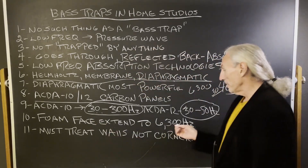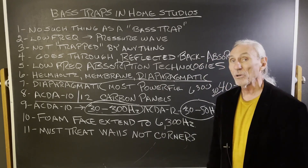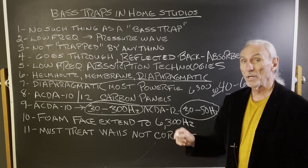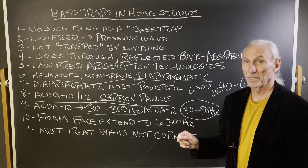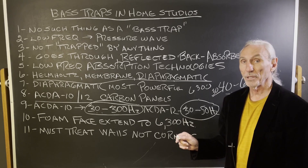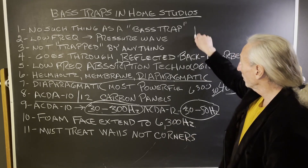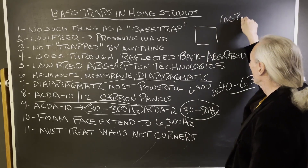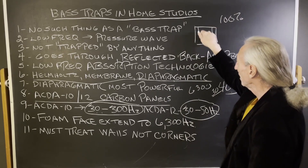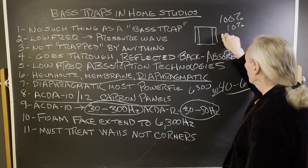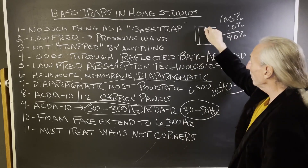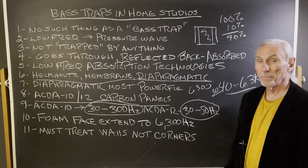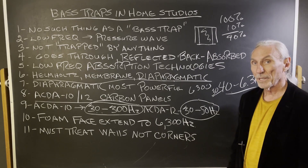The foam face extends to 6,300. You must treat walls, not just the corners. By definition, unwanted low frequency pressure exists between two, four, or six parallel surfaces — not corners. If you look at the corners of a room, and your whole problem is the entire wall at 100%, you're going to treat just the corners — what is that, 10%? So you still have a 90% problem. You still haven't treated the wall. You'll get a little bit of relief in the corners, but it won't be at the low frequencies; it'll be at the middle and high frequencies.